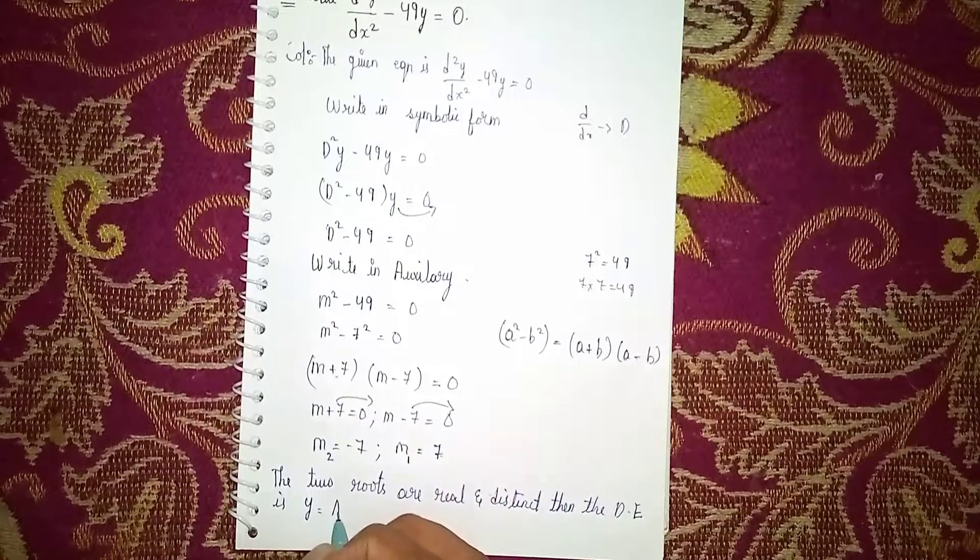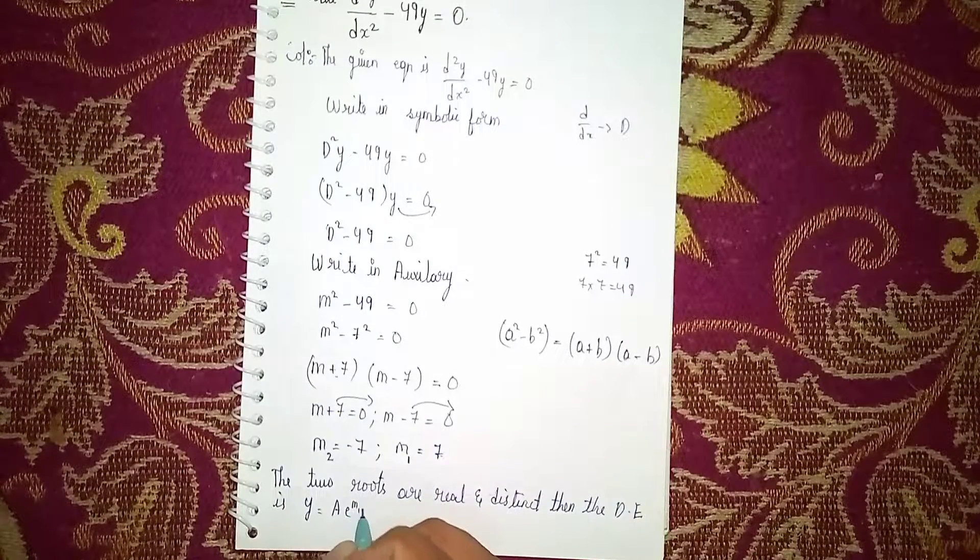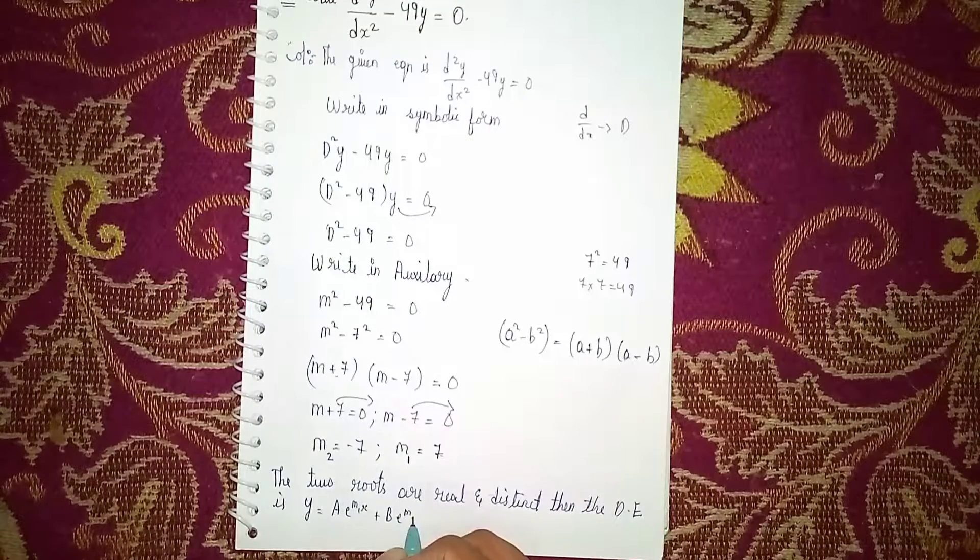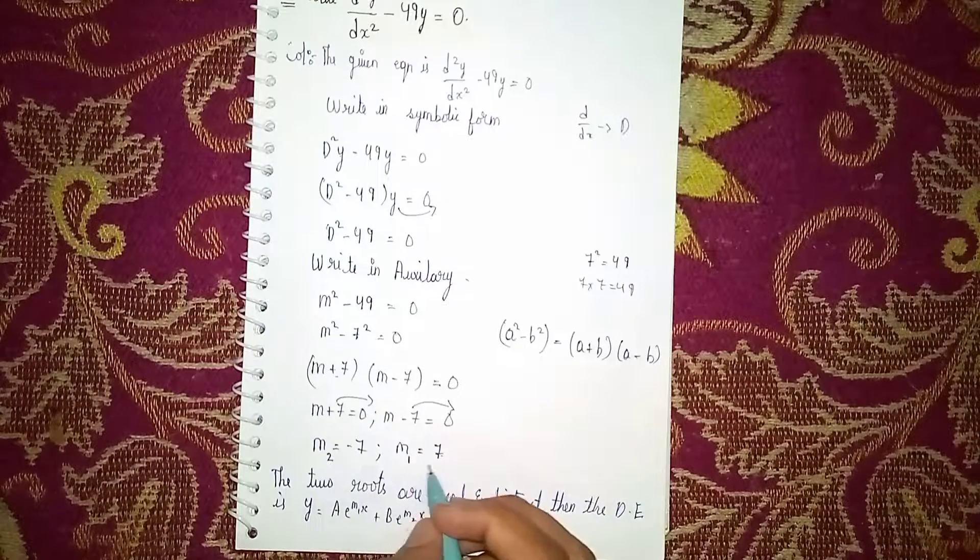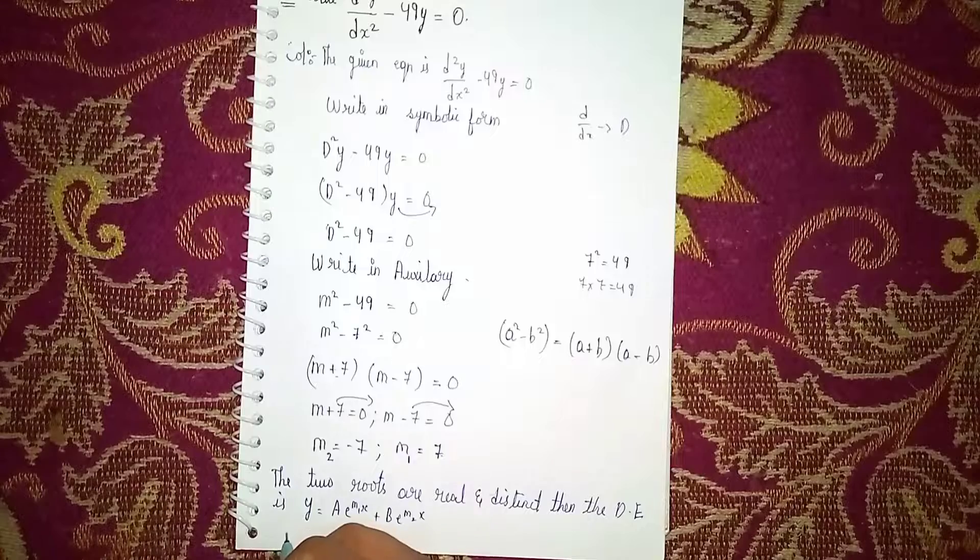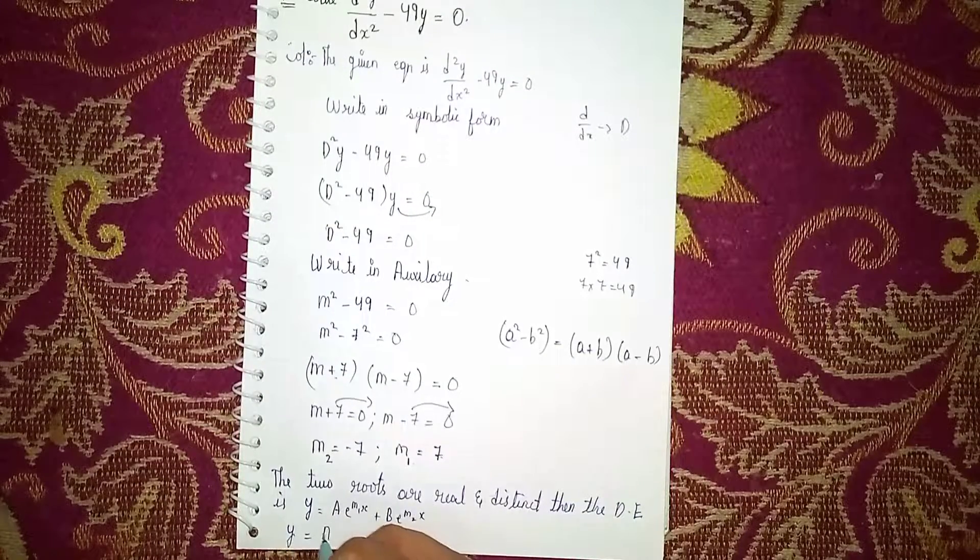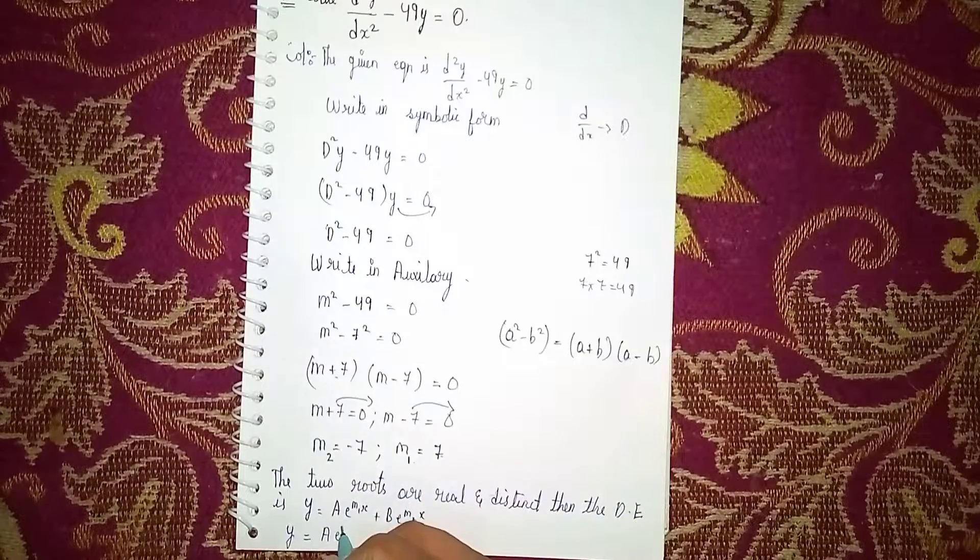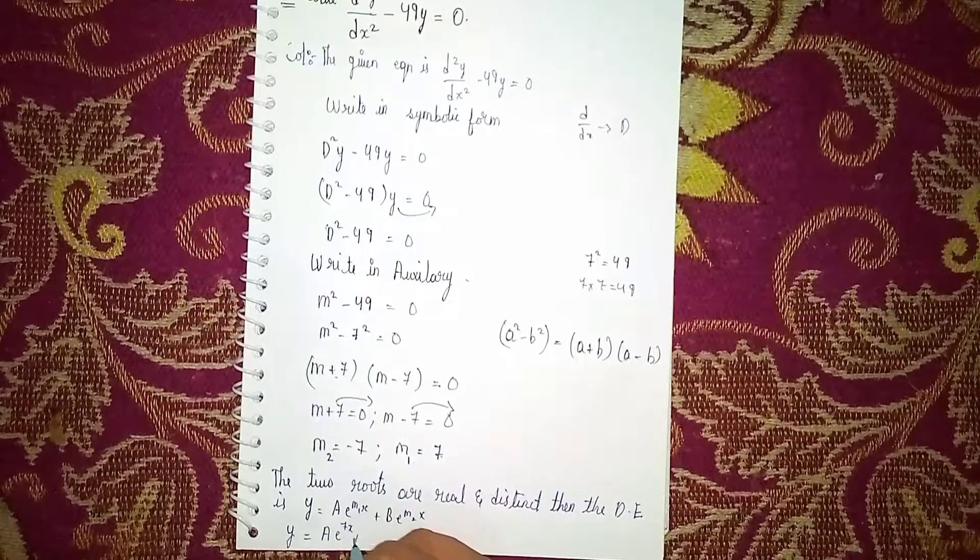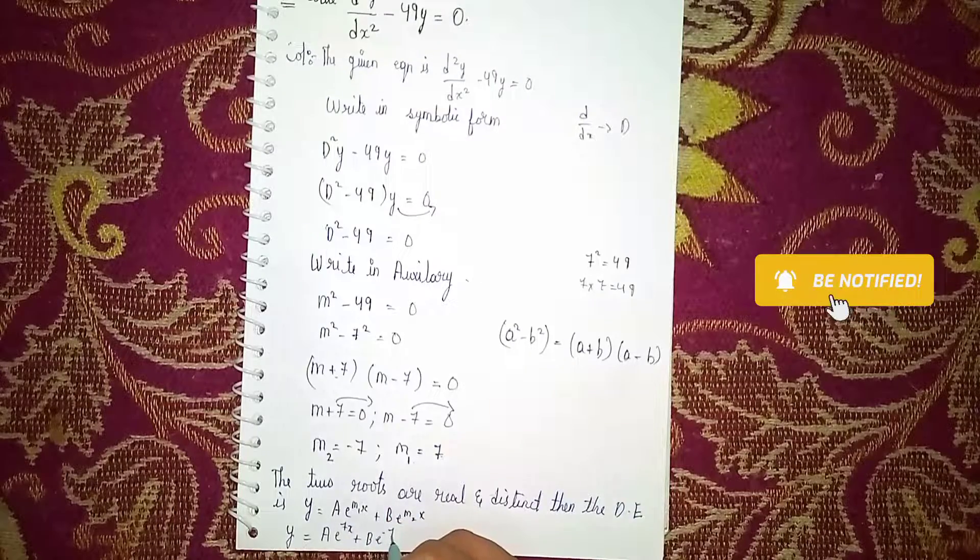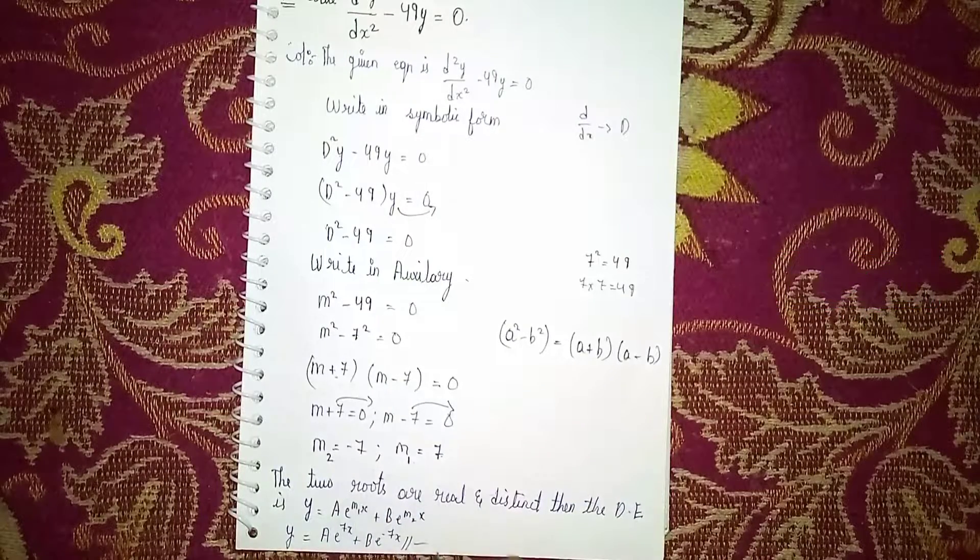Now substitute the values m₁ and m₂ here. Our answer is y = Ae^(7x) + Be^(-7x). This is our answer. Thanks for watching.